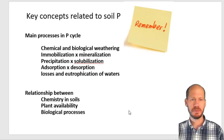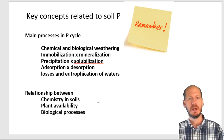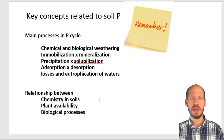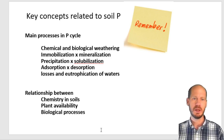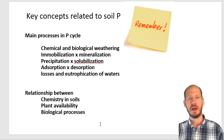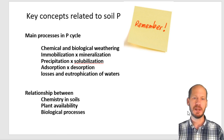To finalize this first part, the main concepts you need to remember are: chemical and biological weathering releasing phosphate, immobilization and mineralization processes, precipitation and solubilization processes, adsorption and desorption, and losses and eutrophication of waters. You should focus on the relationship between chemistry, plant availability, and biological processes. That is all for the first lecture. The next video will be the second part of the phosphorus subject. I hope you enjoyed. Thank you.